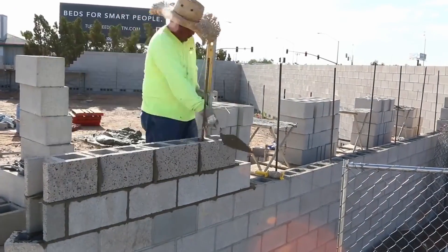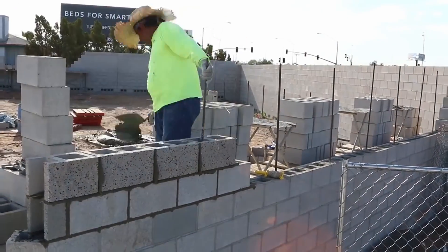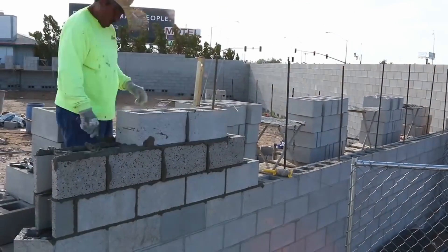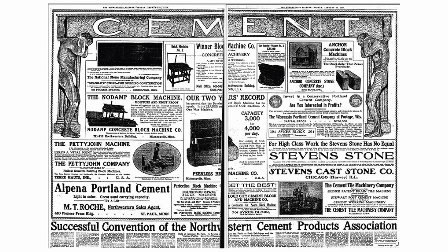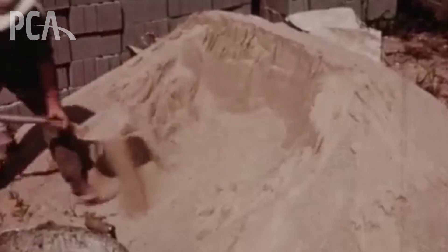For comparison, here's a recent video of a person laying CMU block — it's almost exactly the same. Even though CMU construction grew popular in the mid-20th century, it was actually created much earlier. The first hollow concrete block was designed in 1890 by Harmon S. Palmer in the United States, and it hasn't really changed much since then, either in composition or in its shape.